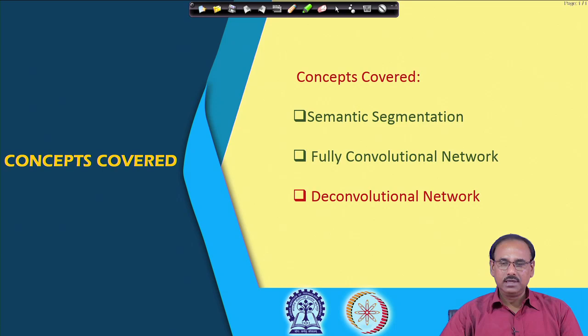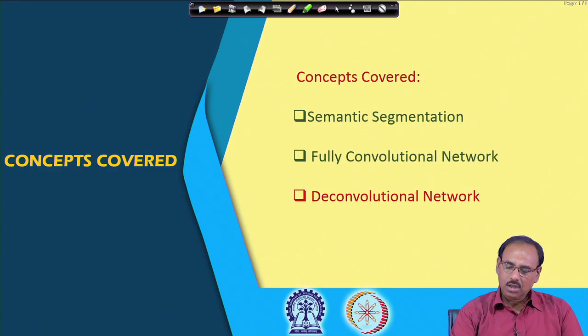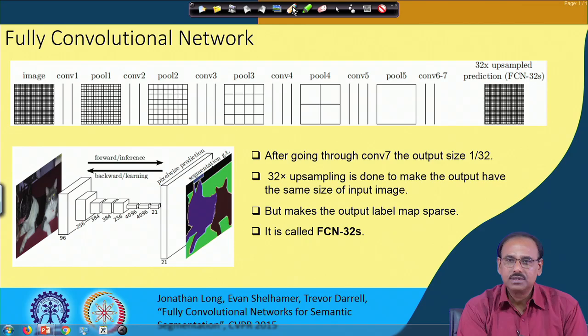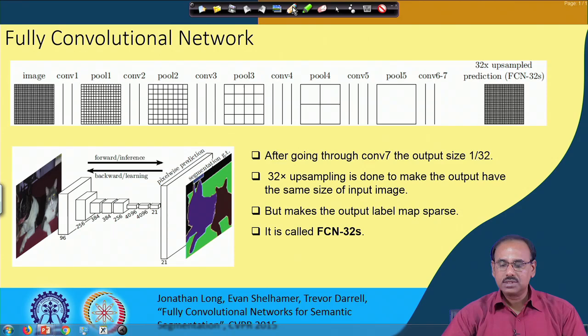Before we go to the deconvolutional network, let us quickly summarize what we had seen in our previous class, and we will also try to see what is the drawback of this fully convolutional neural network which the proposers of the deconvolutional neural network have tried to address. In a fully convolutional neural network, as we have seen in our previous lecture, it consists of 7 convolutional layers and 5 max pooling layers.